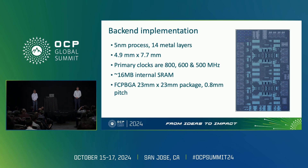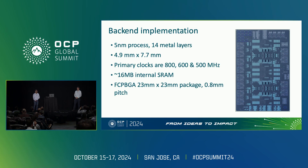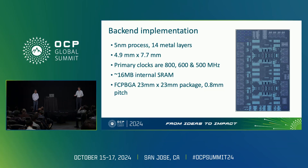In terms of power, worst-case numbers would be around 7.5 watts for a 2×50 gig mode and 12.5 watts for a 4×100 gig mode. The power numbers are competitive — those are the more worst-case figures.